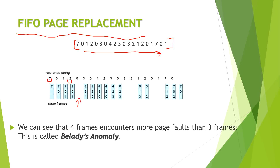When page zero comes next, the CPU sees that zero is already there — this is a page hit. After this, frame 3 is demanded by the CPU but is not in physical memory. It will replace the page which came first in the sequence, which is zero, and store itself in the location of zero. In the same way, zero replaces one, as one came first in the sequence.